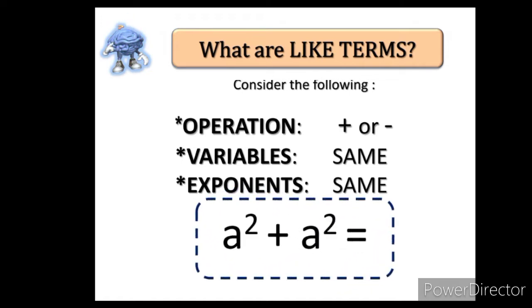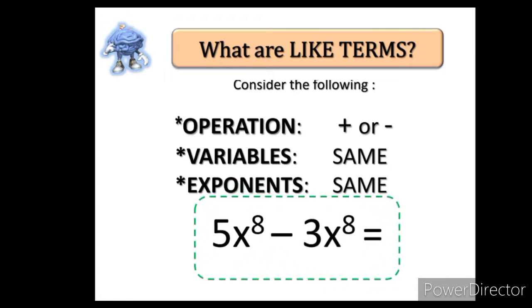Just like this example. The operation here is addition. The variables are both a, and the exponents of the variables are both 2 or squared. Another example. The operation here is subtraction. The variables are the same, and they both have an exponent of 8 or to the 8th power. Again, consider the operation, variables, and the exponents of the variables. If all the three things are being followed, they are like terms. But if any one of these is being violated, they are unlike terms.